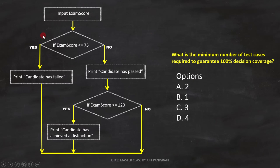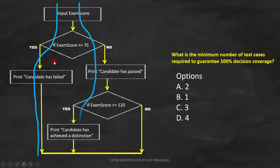Now let's use the flowchart to solve the question. We need to find the minimum number of test cases required to guarantee 100% decision coverage — that means we must cover all the decisions. With 3 test cases, we can cover all the decisions. Therefore, option C — 3 — is the answer.